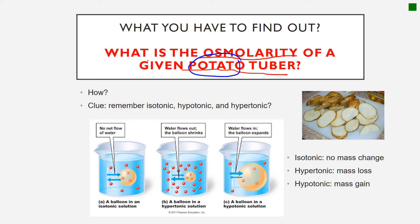Now the question is how? Well, that's what you have to find out. But I will give you some clue. Remember isotonic, hypotonic, and hypertonic. So in isotonic, if you put a tissue or a cell, there will be no change in the cell because the net flow of water is just the same.